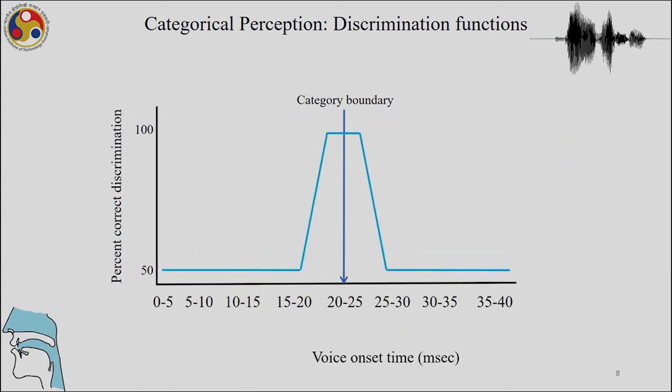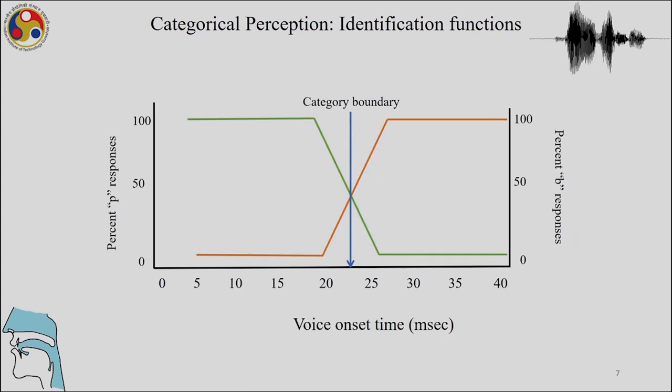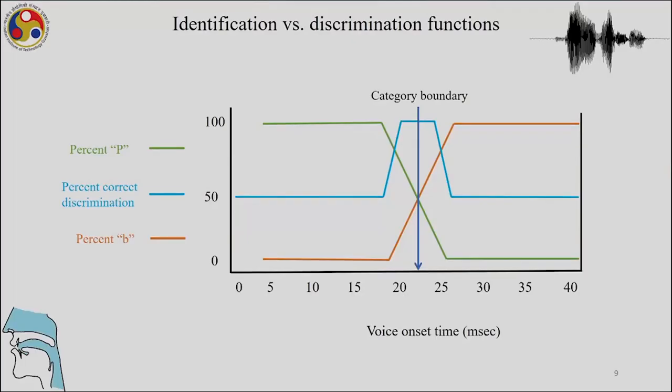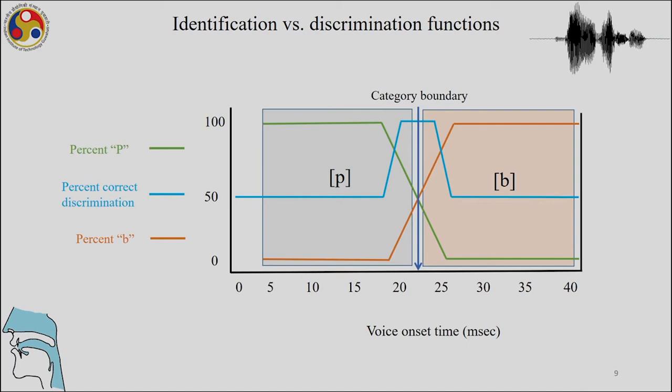We saw identification and discrimination. In identification, this is forced identification — participants are asked to identify based on orthography whether something is 'ba' or 'pa'. In discrimination functions it is not based on orthography; speakers hear a sound and identify it as that sound or another. Both experiments merge in the finding of a category boundary — it is either 'ba' on one side and 'pa' on the other, and speakers never hear an in-between category.